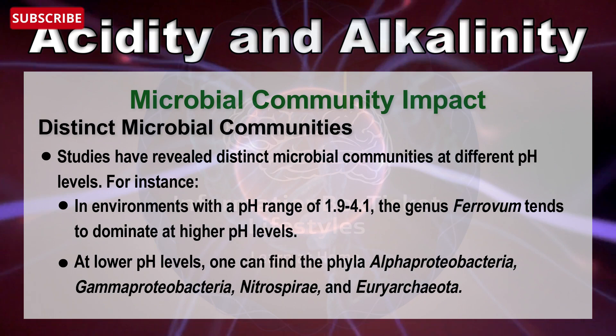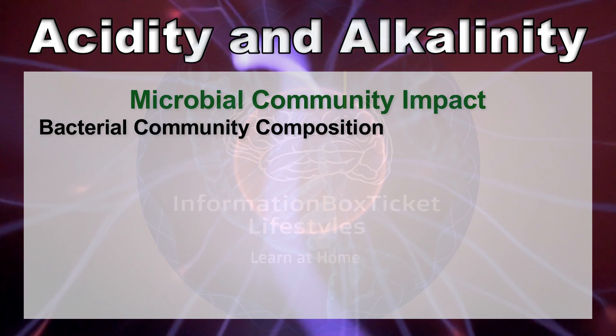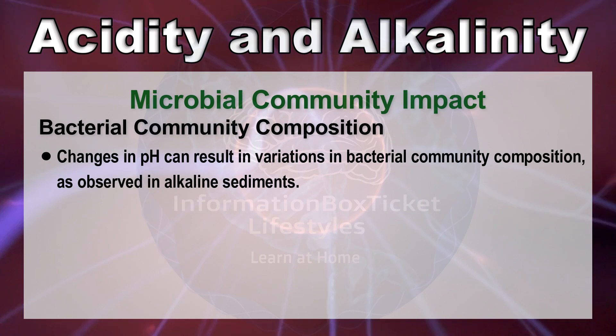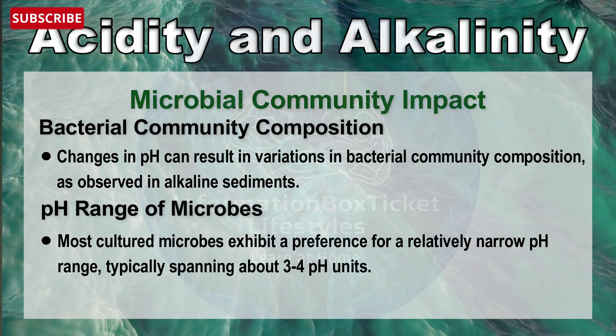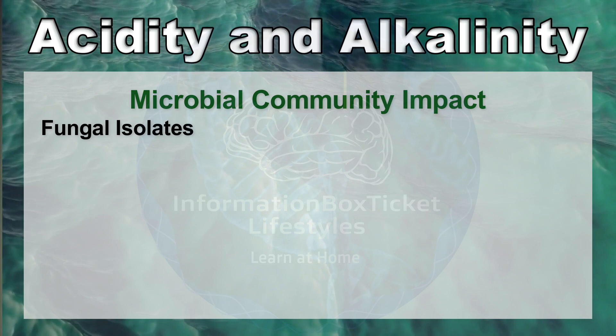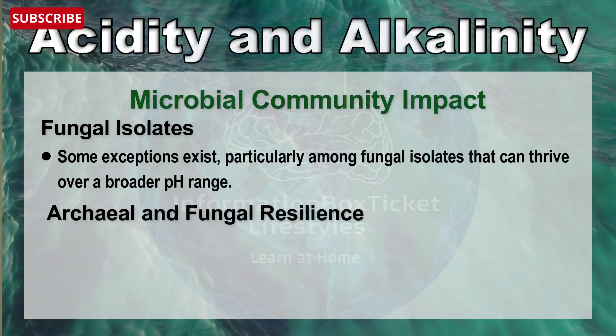Changes in pH can result in variation in bacterial community composition, as observed in alkaline sediments. Most cultured microbes exhibit a preference for a relatively narrow pH range, typically spanning about three to four pH units. Some exceptions exist, particularly among fungal isolates that thrive over a broader pH range. It has also been suggested that archaeal and fungal communities may be less affected by changes in pH compared to their bacterial counterparts.